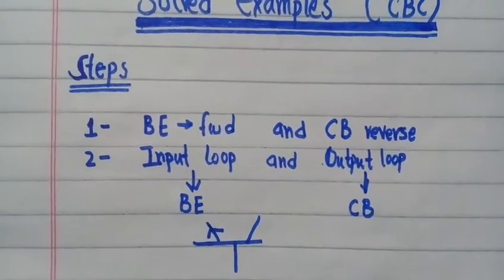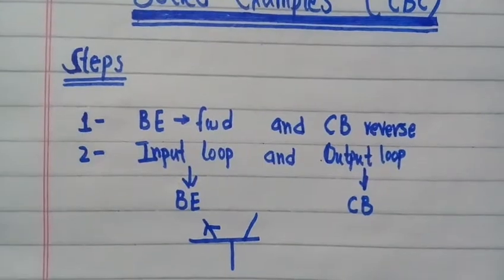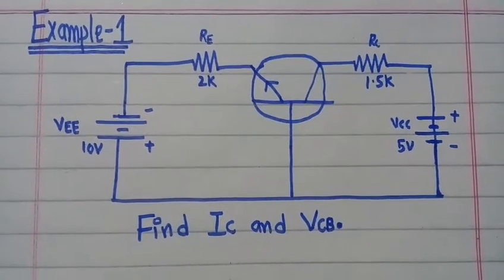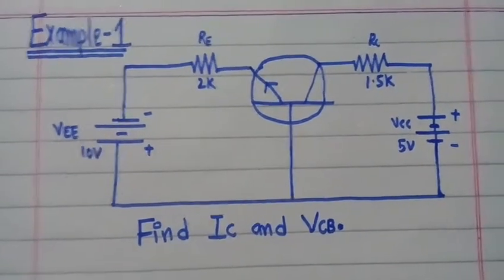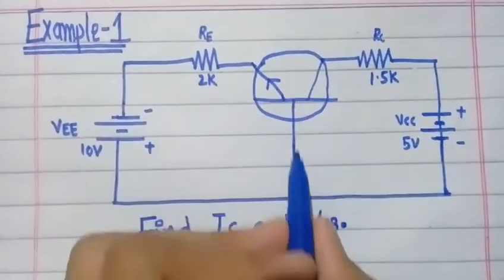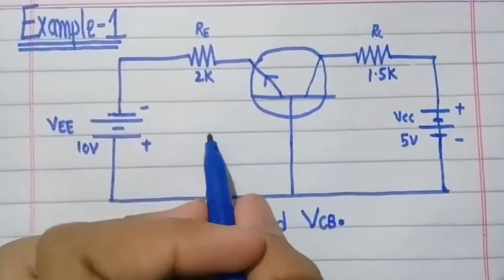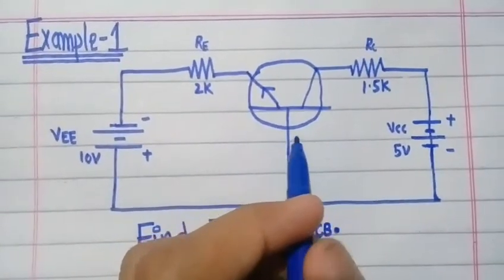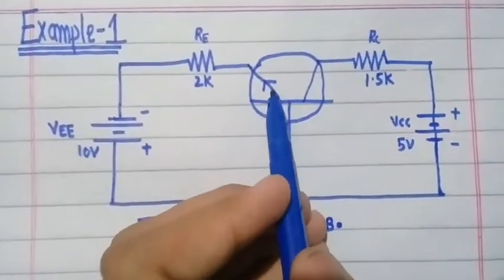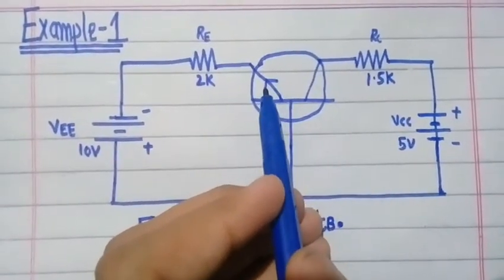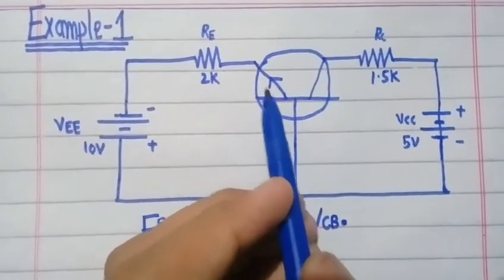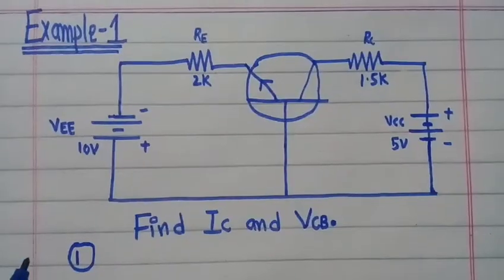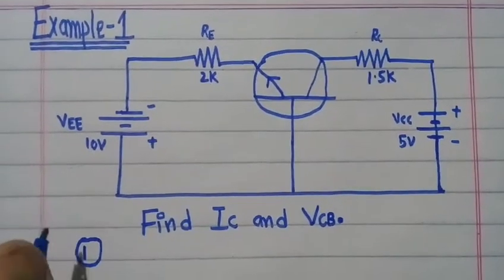Now let's start with example number one based on common base configuration. You will see that the base terminal of the transistor is common between the input loop and the output loop, so this is a common base configuration. The emitter side is shown with an arrow, and since the arrow is not pointing inward, this will be an NPN transistor — this is the N side, this is the P side, and this is the N side.